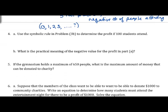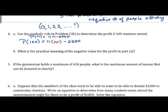Now we use our symbolic rule to determine the profit if 100 students attend, that is P(100). Remember P(N) = 11N − 2200, so we replace N with 100: 11 times 100 is 1100, minus 2200 gives us negative $1,100.